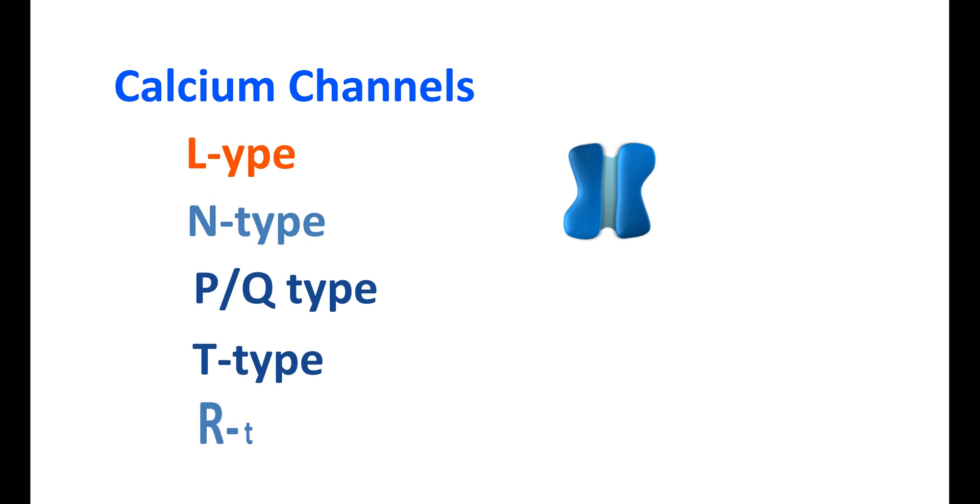Normally, calcium channels can be classified into different categories. Among these, voltage-gated calcium channels can be classified into five types based on their role and function in the body. They can be classified as L-type, N-type, P/Q-type, T-type, and R-type.